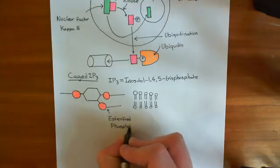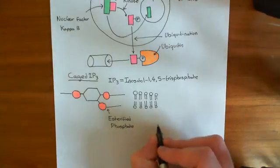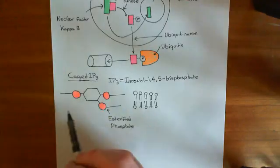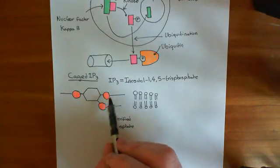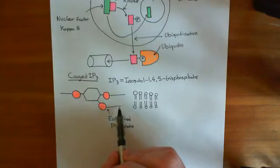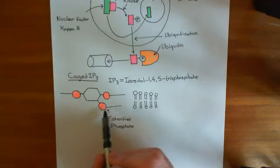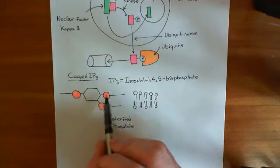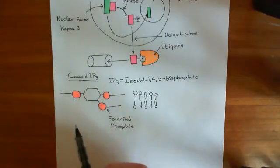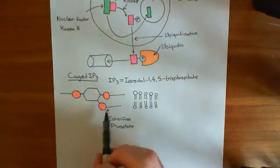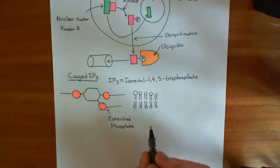So these are esterified phosphate groups — that's just a technicality of how we get IP3 through the cell membrane. When IP3 gets into the cell, what happens is that these phosphate ester links are broken and you return it back down to IP3. But we haven't yet discussed what caged IP3 is, because the esterification is just a mechanism for getting it into the cytoplasm.